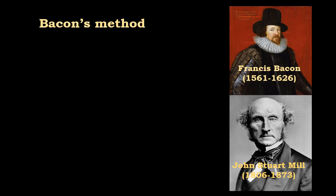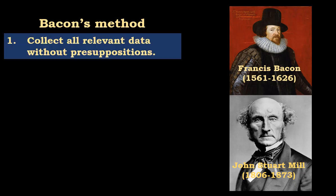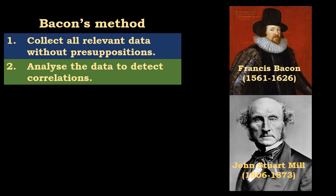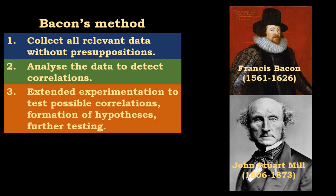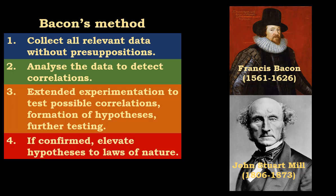Let's recap Bacon's method. First, collect all relevant data without presuppositions. Second, analyze the data to detect correlations. Third, extend experimentation to test possible correlations, formation of hypotheses, and further testing. If confirmed, elevate hypotheses to laws of nature.